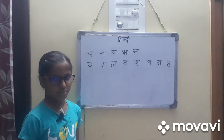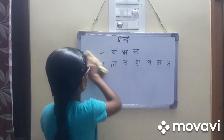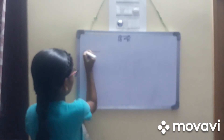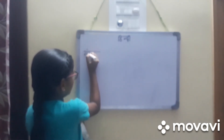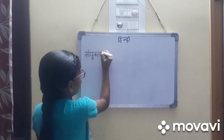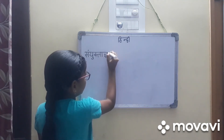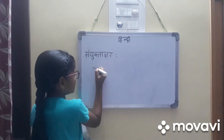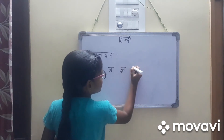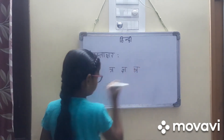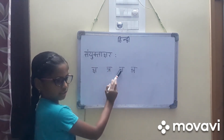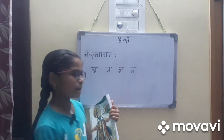Next we are going to learn Samyuktaakshar. Samyuktaakshar: Cha, Tra, Cha, Nya, Shra. Samyuktaakshar — Cha, Tra, Nya, Shra. Varnamala completed!